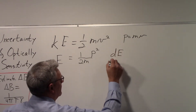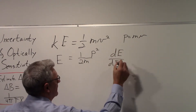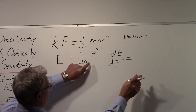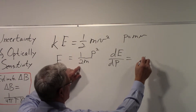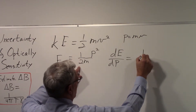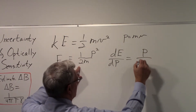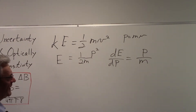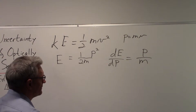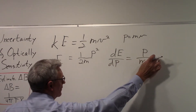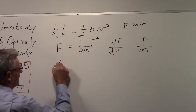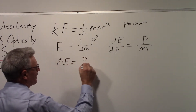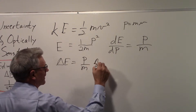Taking dE/dp: the derivative of p²/2m with respect to p gives p/m. Writing this in terms of deltas, we have ΔE = (px/m) · Δpx.